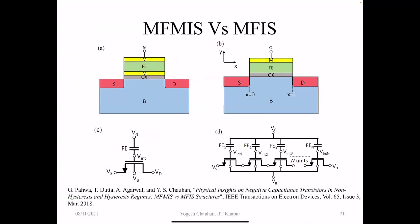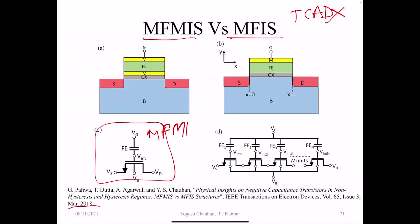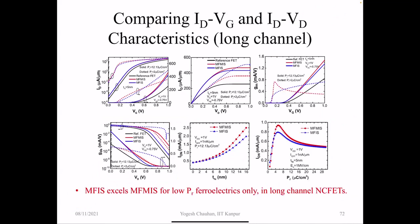We did an exercise comparing MFMIS versus MFIS at a time when TCAD did not support the Landau model. So we used a SPICE model. For MFIS, where V_int varies from source to drain, we partitioned the device into N units each considered as MFMIS, and used this trick to simulate the MFIS. We considered the long channel transistor and found that MFMIS always gives better results, because all dipoles switch together compared to the MFIS case, which shows smoother switching.